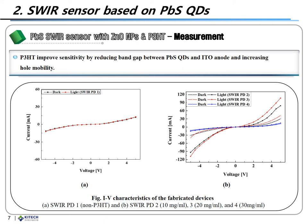These results indicate that the maximum on/off ratio of the PbS SWIR photodetector with a PCBM layer was 1.417 times that of the PbS SWIR photodetector without a PCBM layer.